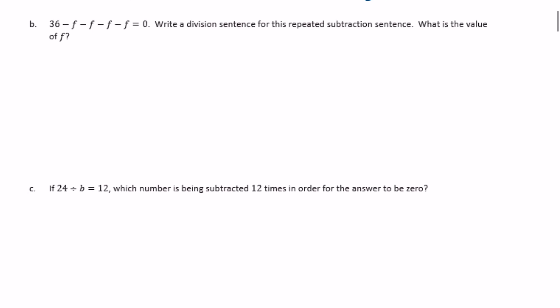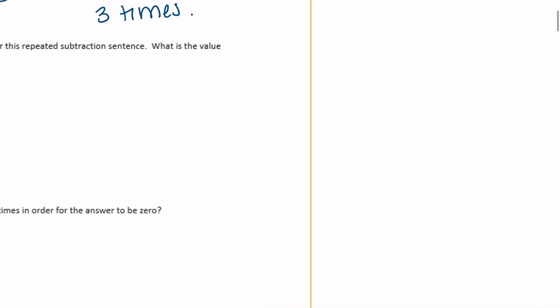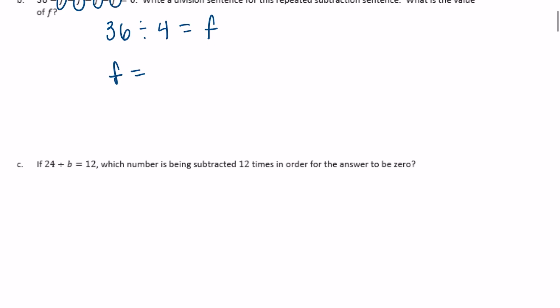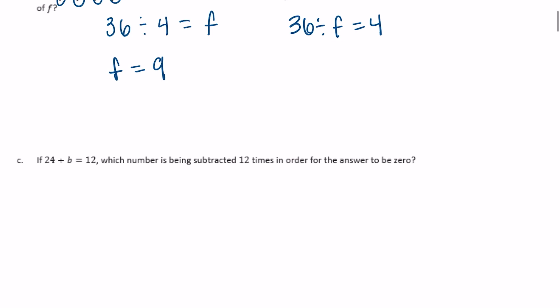Part b: 36 minus f minus f minus f minus f equals 0. Write a division sentence for this repeated subtraction sentence. What is the value of f? We have four f's being subtracted. So 36 divided by 4 equals one f, and 36 divided by 4 is 9, so f equals 9. Another equation you could write is 36 divided by f equals 4, and since 36 divided by 9 equals 4, f is still equal to 9.